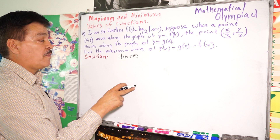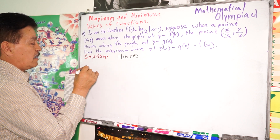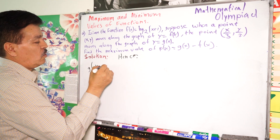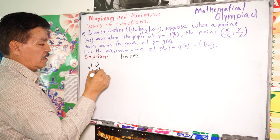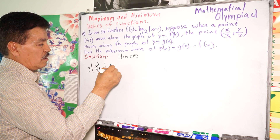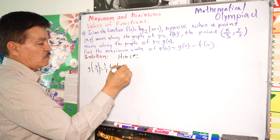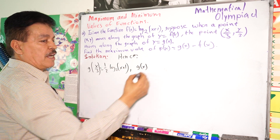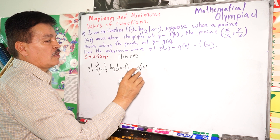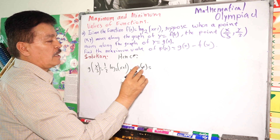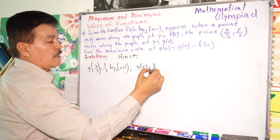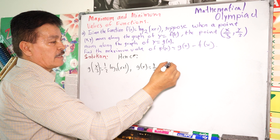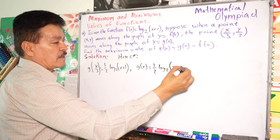From the data given before, we have g(x/3) = ½ · log₂(x + 1). Then g(x) equals ½ · log₂(3x + 1).